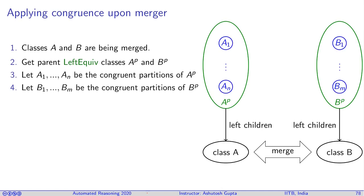As discussed, each of the terms inside A and B are divided into the both-equi equivalence class. Call them A1 to An inside A and B1 to Bm inside B. Since class A and class B are being merged, their parent left-equi classes should also be merged. So all of A1 to An and B1 to Bm will have the same left-equi class.